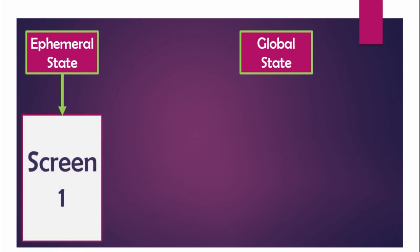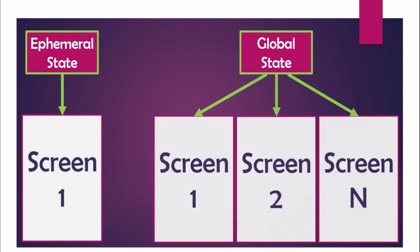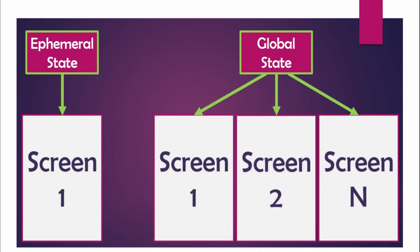Whenever we want to maintain the state of a single screen, we use ephemeral state. Whenever we have to maintain the state of multiple screens, we refer to global state. So far we have used ephemeral state where we called setState and maintained the state of a particular screen, but if you want to maintain the state of multiple screens you have to use global state.